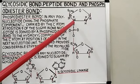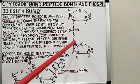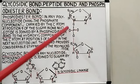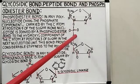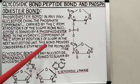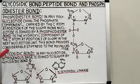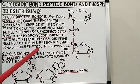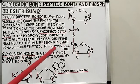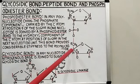Here the formation of the phosphodiester bond is being shown. This phosphodiester bond provides considerable stiffness to the polynucleotide.